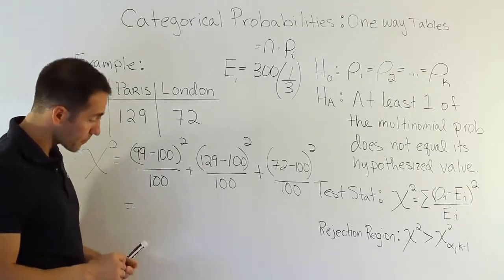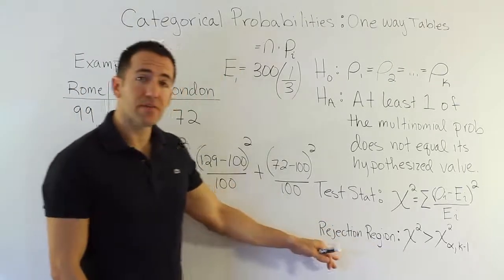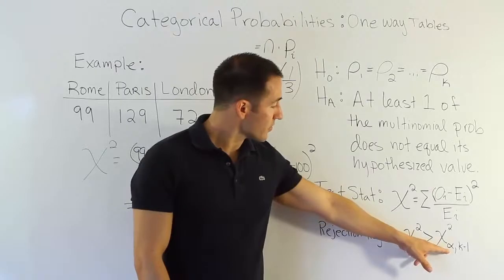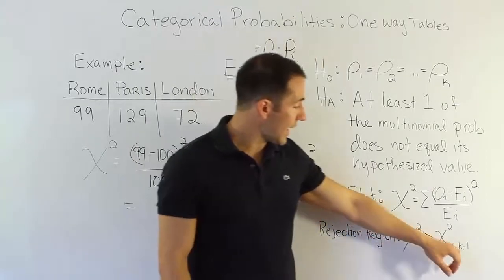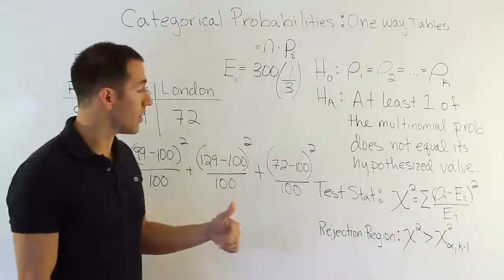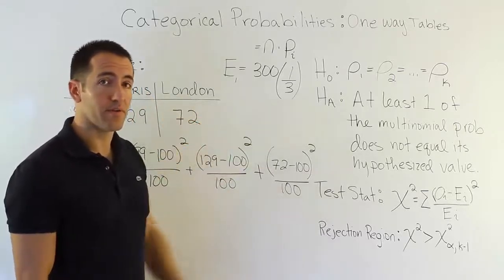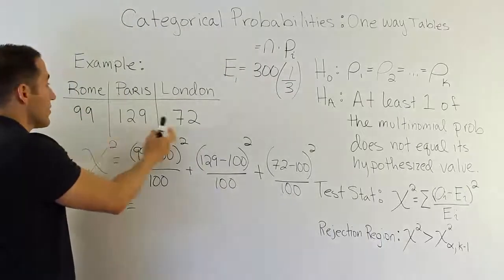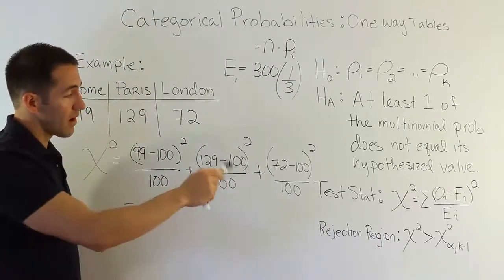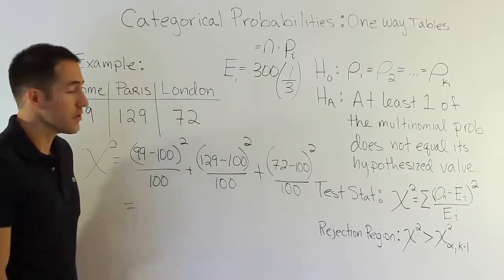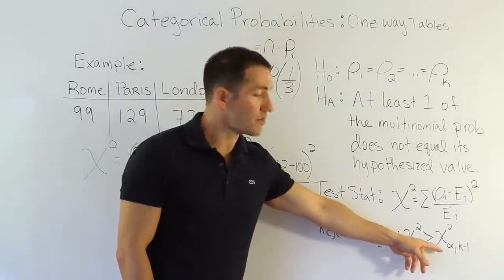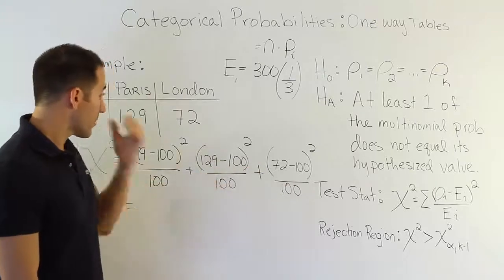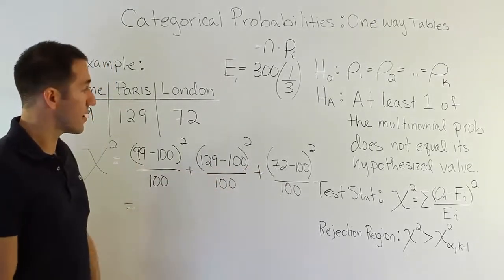Once you have the chi-squared test statistic, you compare it against a critical value from the chi-squared distribution. You look up the critical value using your significance level alpha and K − 1 degrees of freedom. With three categories, that's 3 − 1 = 2 degrees of freedom. If your test statistic is larger than the critical value, you reject H0 and support H_A. Because these numbers are fairly large, we would probably end up rejecting the null hypothesis here.